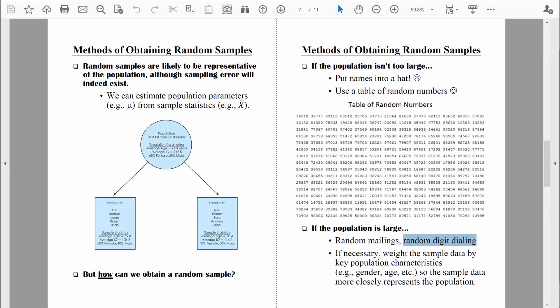There are times when researchers collect data from a sample and then later on they realize that their sample doesn't match the population as well as they'd like it to. In those situations, they can weight the data so that the final results are based on characteristics that do indeed resemble the population. Let me give you a quick example.